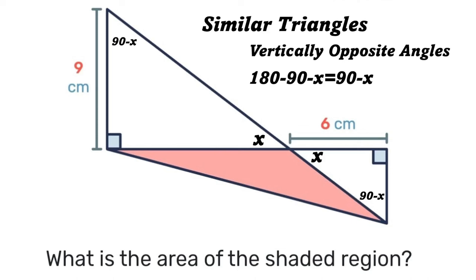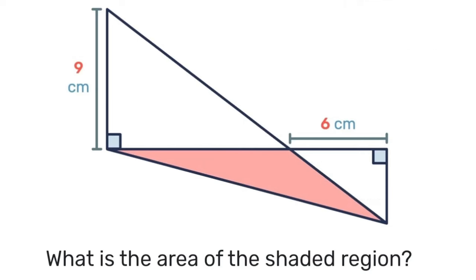So we have that the three angles in the small white triangle equal the three angles in the large white triangle. Therefore, these two triangles are similar triangles. Now, what does that mean visually? It means that we can take this smaller triangle, flip it around, turn it over...